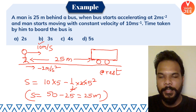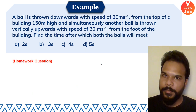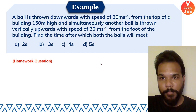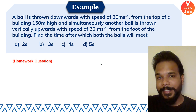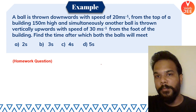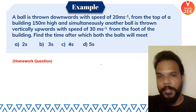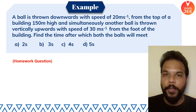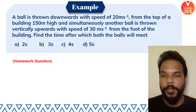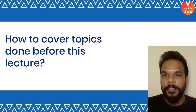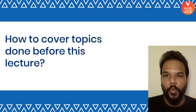Homework question: A ball is thrown downward at 20 m/s from the top of a building. Simultaneously, another ball is thrown vertically upward at 30 m/s from the foot of the building. Find the time after which both balls meet. Try it and put your answers in the comments — I will confirm if you are correct.